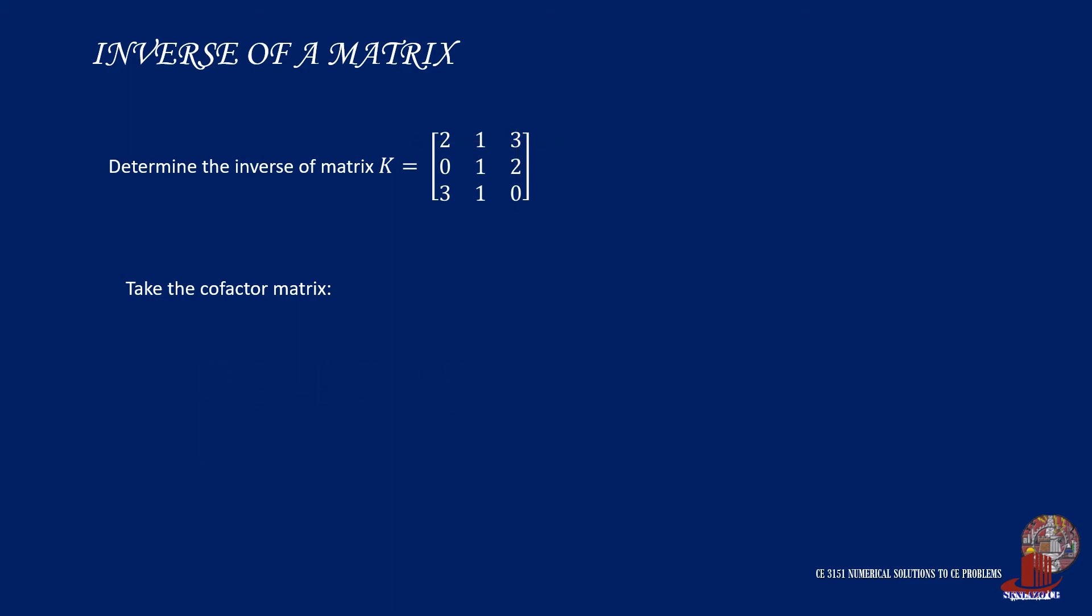The next element, element 2,1, would be negative of the submatrix 1, 3, 1, and 0. Element 2,2 will include the elements 2, 3, 3, and 0. The cofactor of element 2,3 will be negative of 2, 1, 3, and 1.